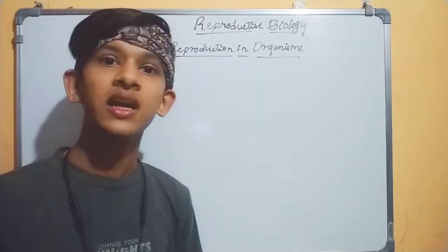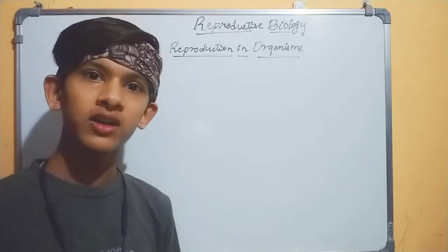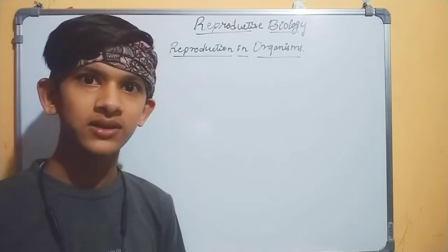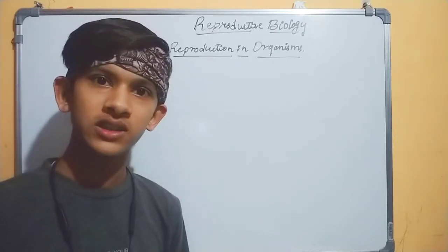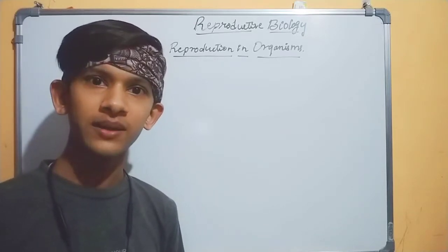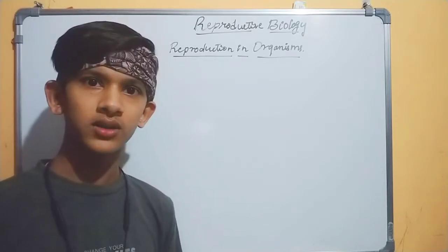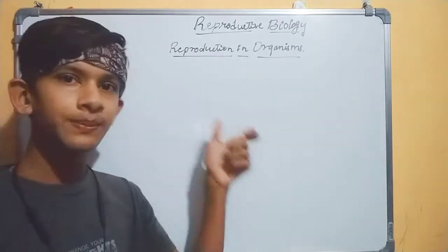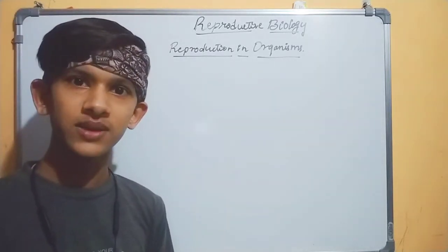That is, reproductive biology. We have three chapters in reproductive biology: reproduction in organisms, reproduction in flowering plants, and human reproduction. First, we will start with a simple topic — that is, reproduction in organisms.